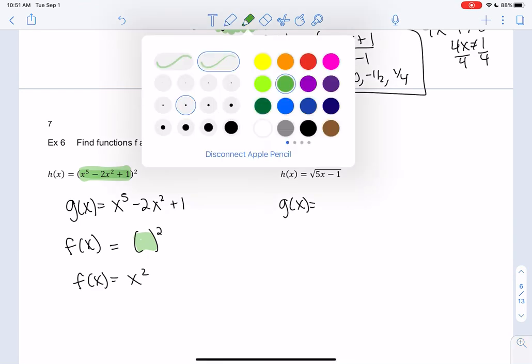So g of x, that's my inner function. Looks like 5x minus 1 to me. And then my outer function looks like a square root function. So it's not the square root of 5x minus 1. It's just the original square root function, which is square root of x. But if I were to plug 5x minus 1 back in, I would get h of x.